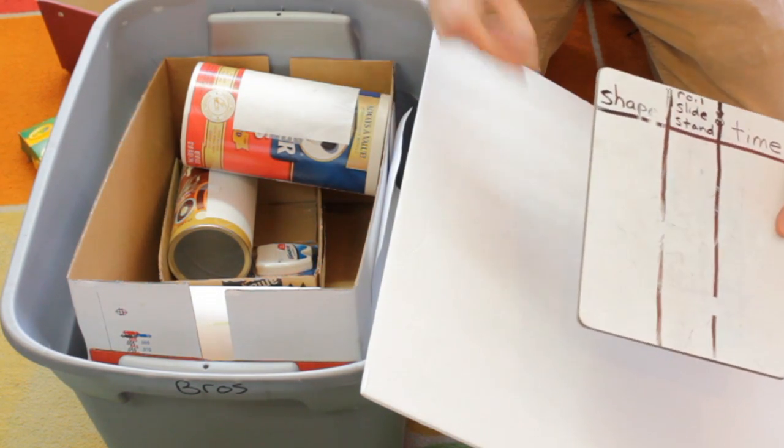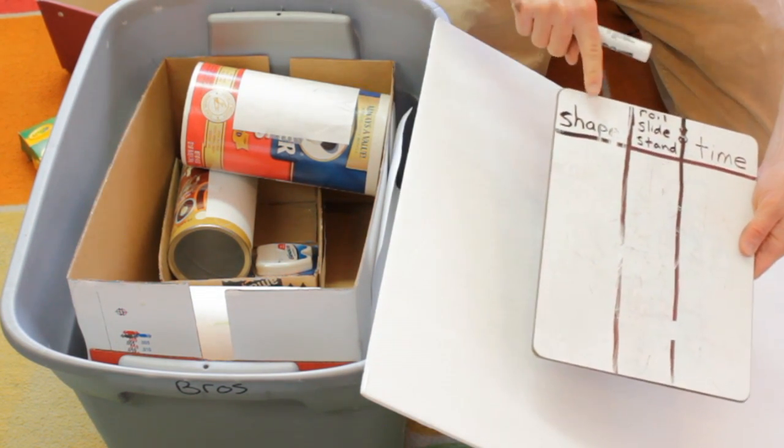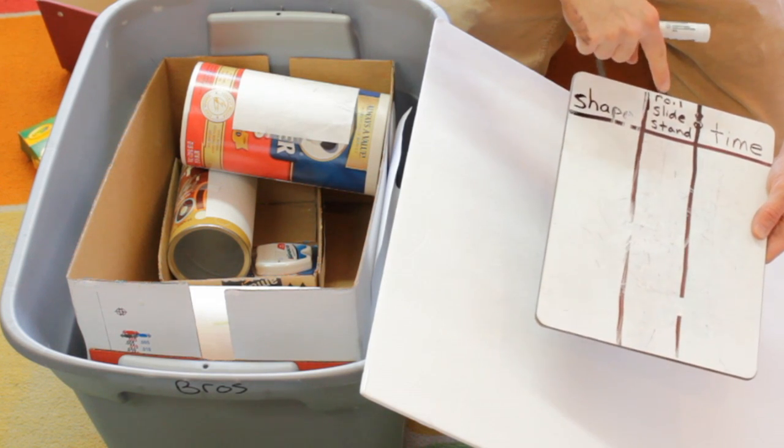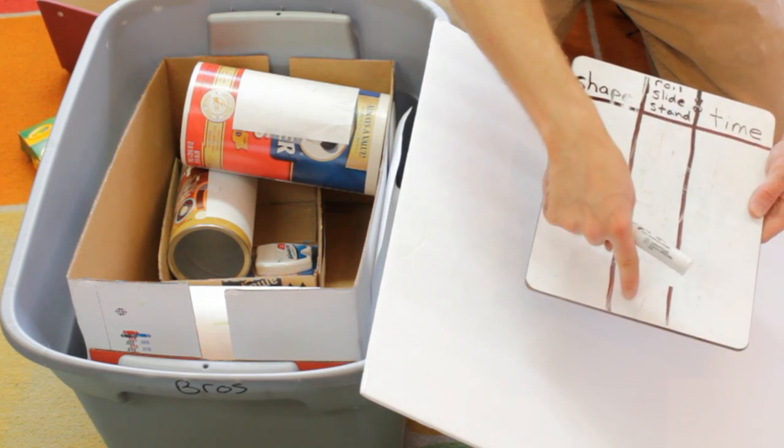And again, you can have scribes come up and it's incentive for them to come up. And you put the shapes down here: roll, slide, or stand, and it's popular vote that wins out.